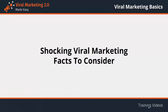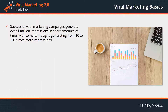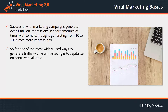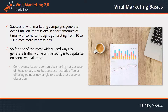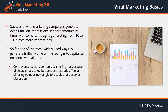Shocking viral marketing facts to consider: successful viral marketing campaigns generate over 1 million impressions in short amounts of time, with some generating 10 to 100 times more. One of the most widely used ways to generate traffic is capitalizing on controversial topics, as that is the easiest way to spark online conversations. Controversy leads to compulsive sharing — not because of cheap shock value, but because it offers a differing point or new angle to a topic that deserves discussion, making content very likely to go viral by triggering extreme emotional responses.